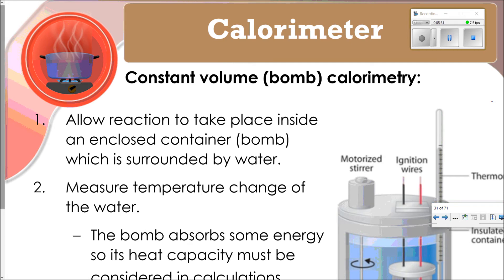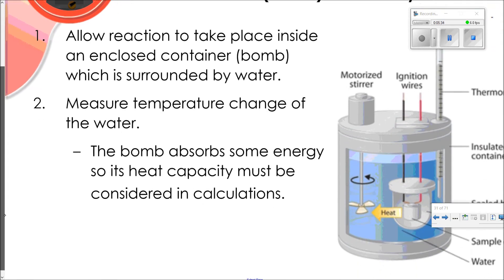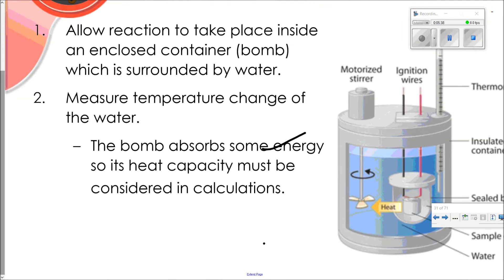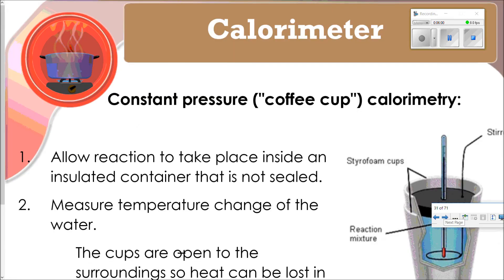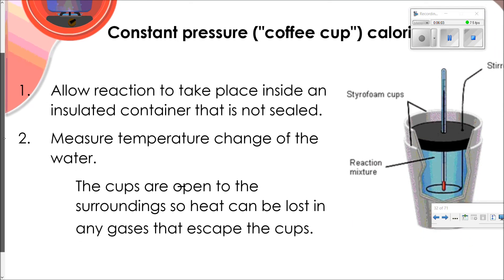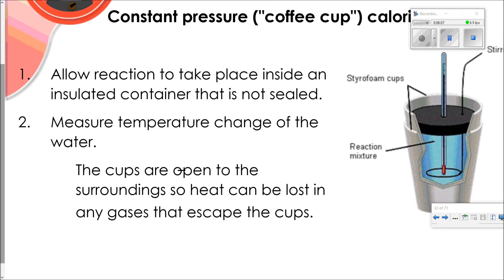Constant volume, or bomb calorimetry, allows the reaction to take place inside an enclosed container surrounded by water. It measures the temperature change of the water, and the bomb's heat capacity must be considered. Constant pressure, or coffee-cup calorimetry, allows the reaction in an insulated but unsealed container — it also measures temperature change of water, but the open cup means heat can be lost through escaping gases.